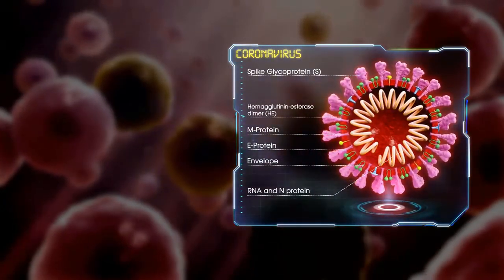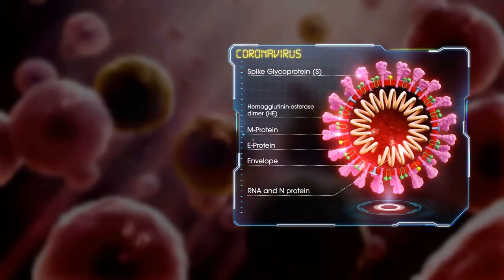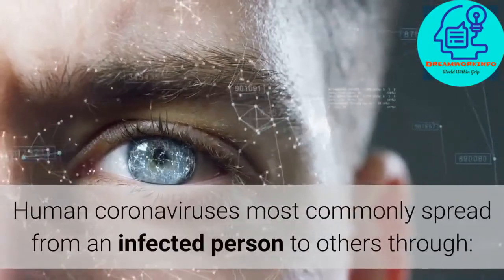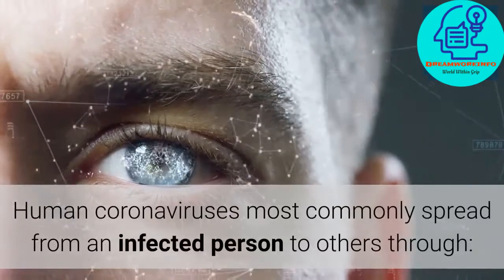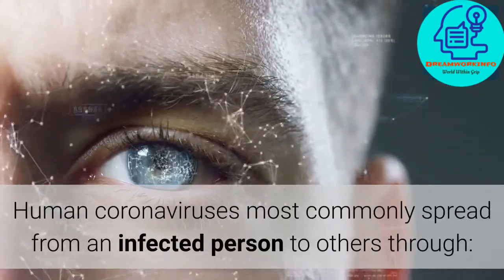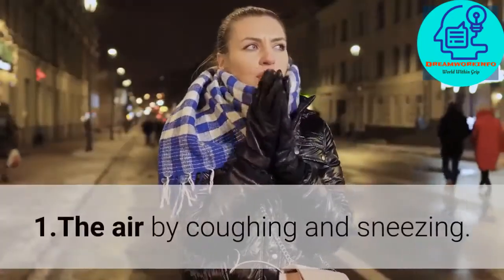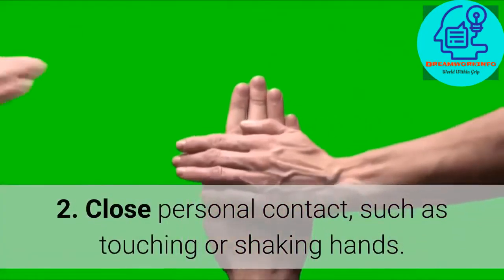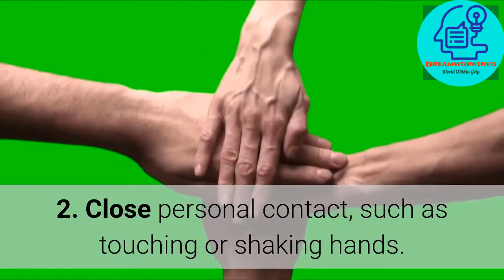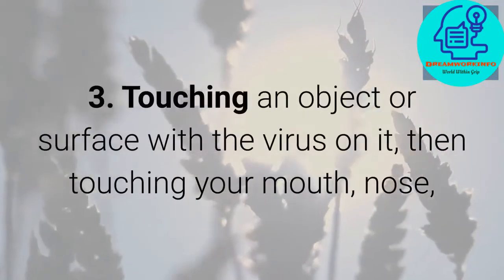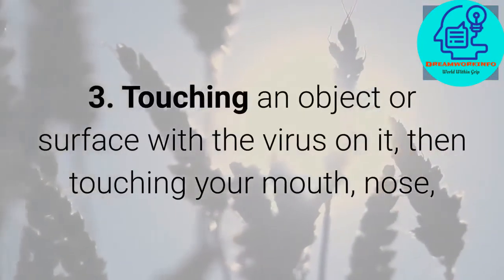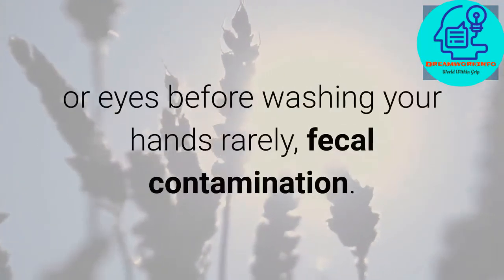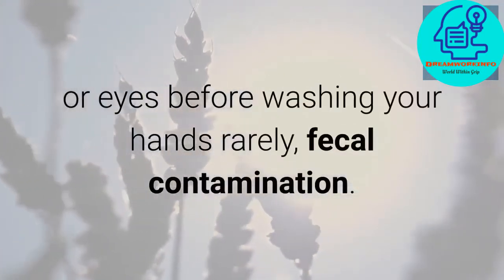The structure of 2019 novel coronavirus is a mutation. Transmission: Human coronavirus is most commonly spread from an infected person to others through: 1. The air by coughing and sneezing. 2. Close personal contact, such as touching or shaking hands. 3. Touching an object or surface with the virus on it, then touching your mouth, nose, or eyes before washing your hands. Rarely, fecal contamination.